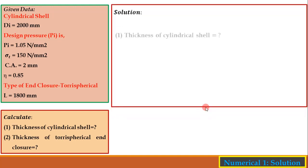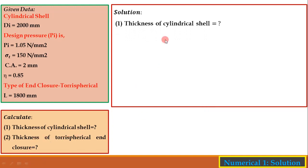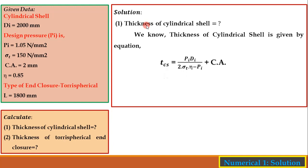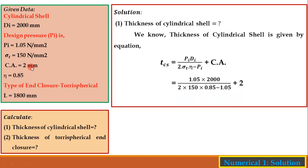Solution, Part 1 — Thickness of cylindrical shell. The formula is: t_cs = (pi × di) / (2 × sigma_t × eta − pi) + CA. Substituting pi = 1.05 N/mm², di = 2000 mm, sigma_t = 150 N/mm², eta = 0.85, CA = 2 mm — the calculated thickness of the cylindrical shell is approximately 10.26 mm.